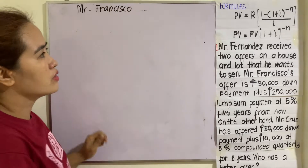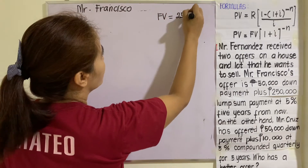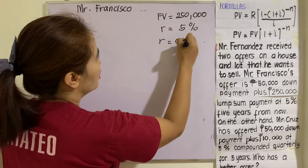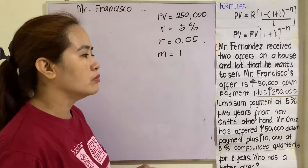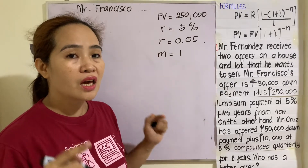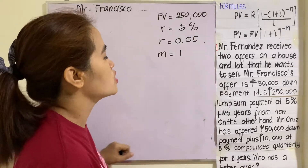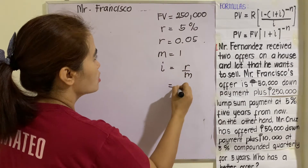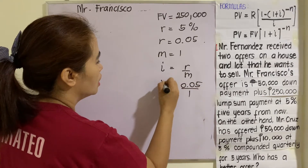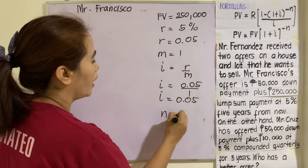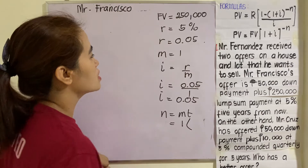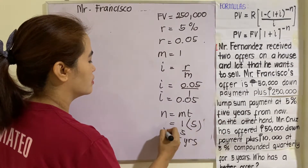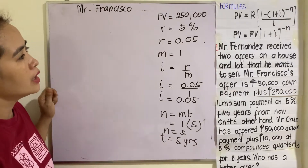For Mr. Francisco's offer, let's identify the given: FV equals 250,000; r equals five percent, or 0.05; m equals one, because this is a lump sum — a full payment after five years. So i equals r divided by m, which is 0.05 divided by 1, giving i equals 0.05. For n, we have m times t, which is 1 times 5, so n equals 5.